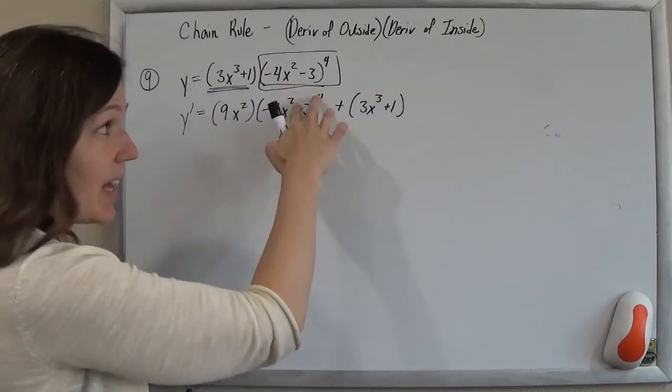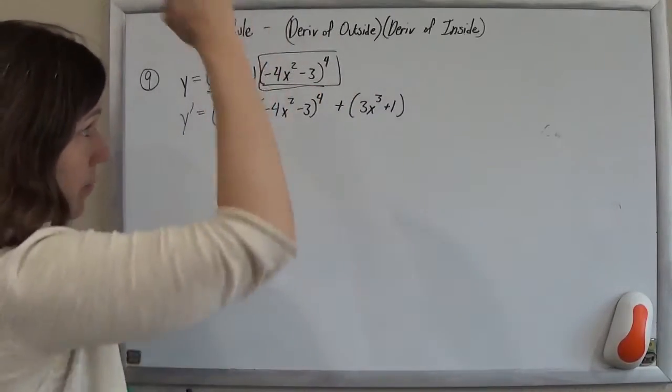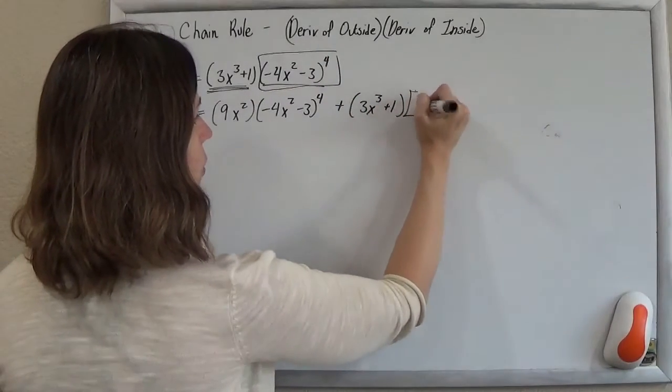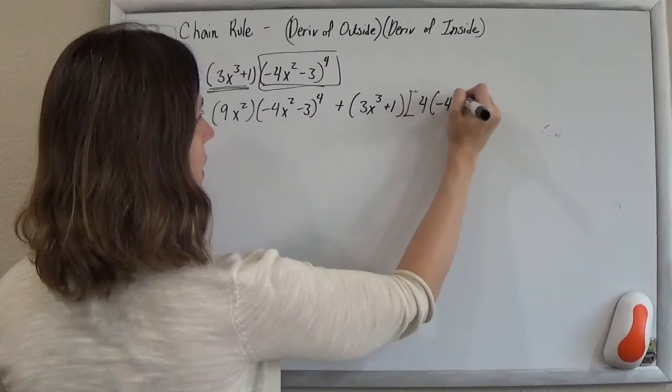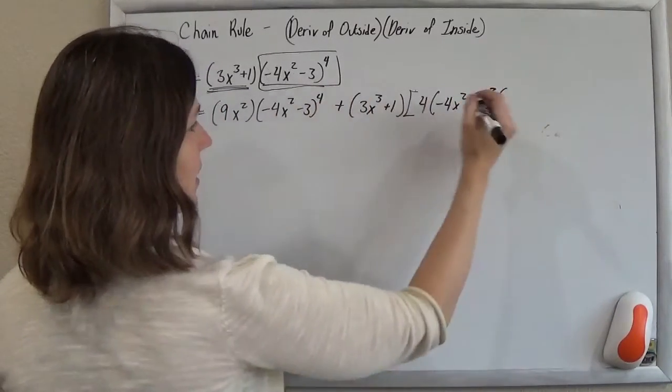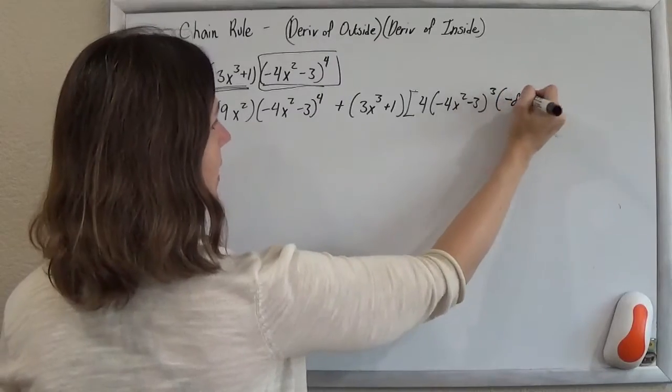And take the derivative of this. Now when you take the derivative of that, that's what we've been doing in the last problem. So we have something to the fourth. So that's going to be 4 times that something, drop the power down, times the derivative of the inside. So negative 8x.